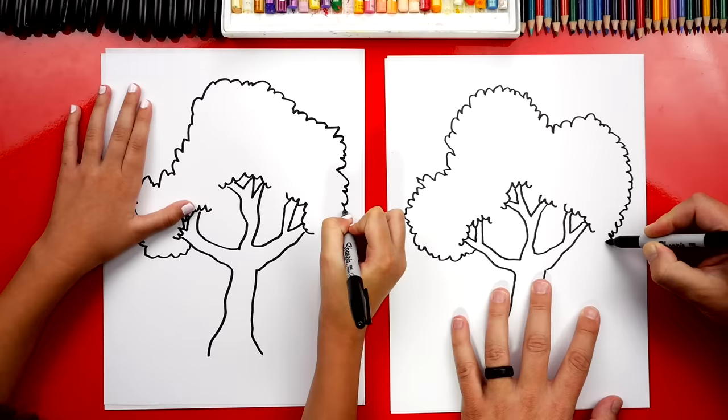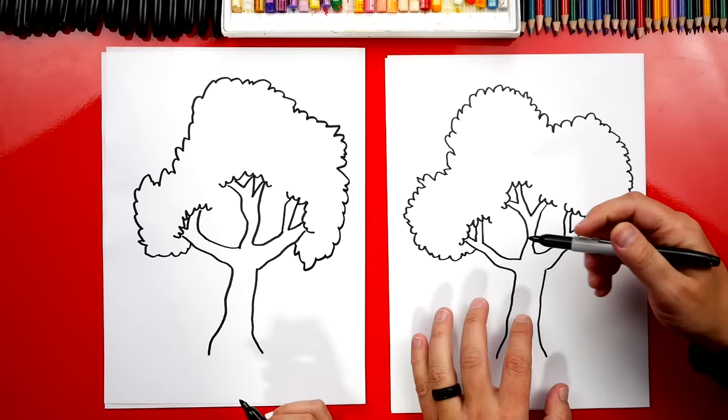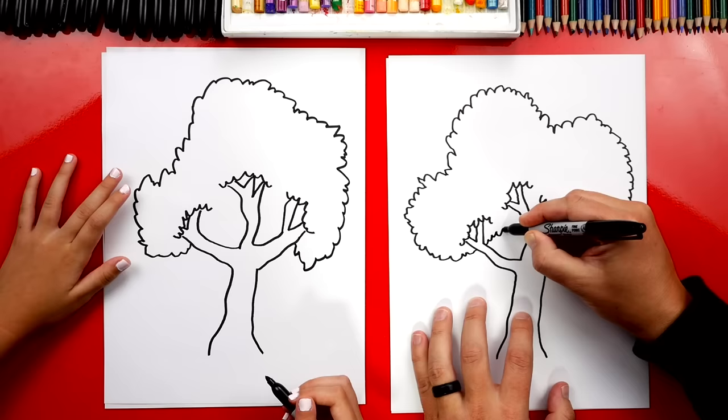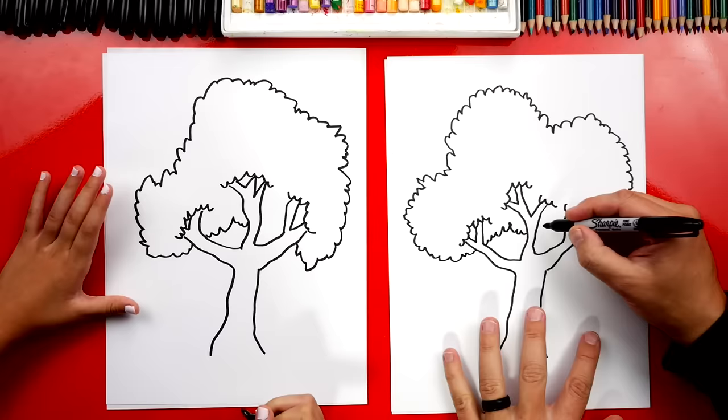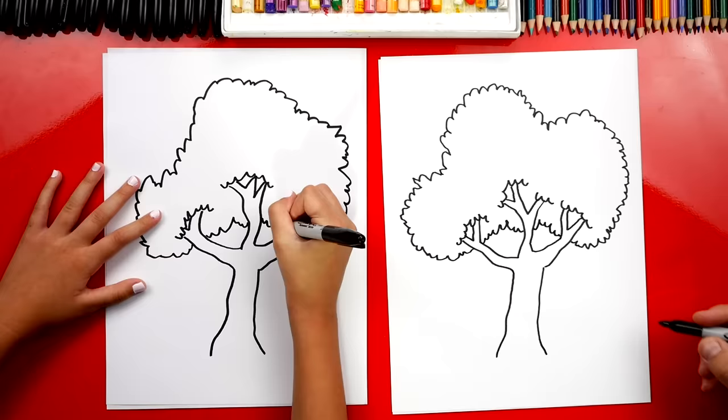Now we're gonna use overlapping. We're gonna imagine the shape, the outside shape of the tree going behind this branch and coming over and connecting to the middle branch. Let's do the same thing. Imagine it going through that one and connecting to this branch and I connected it so that it looks like it's going through and connecting to the outside shape.